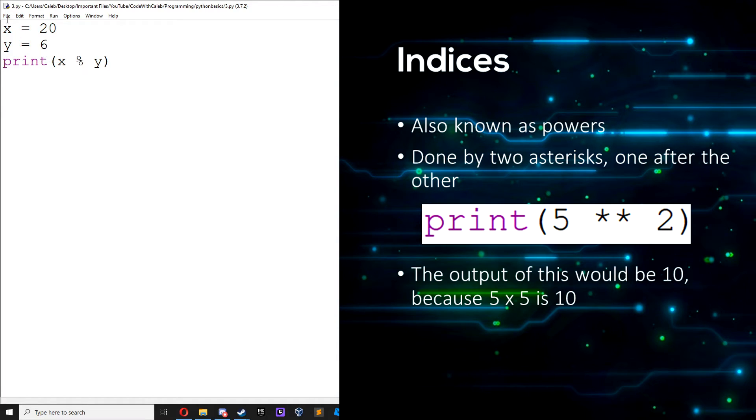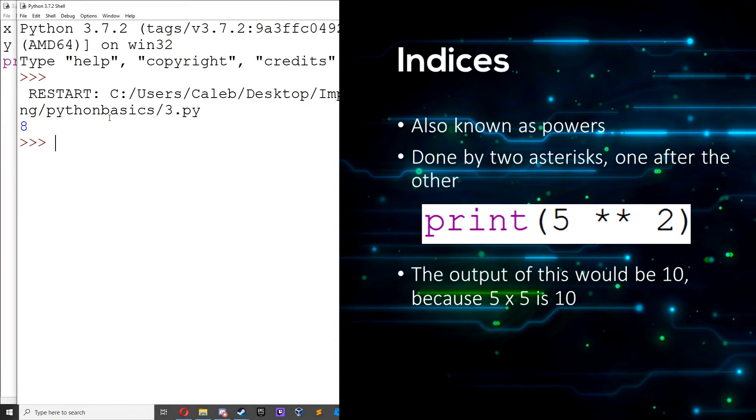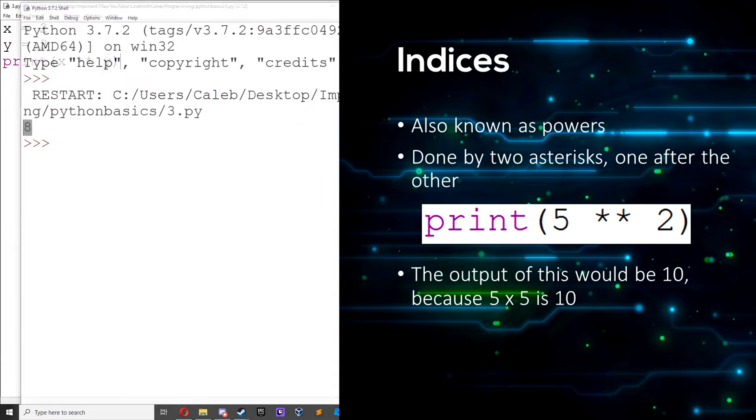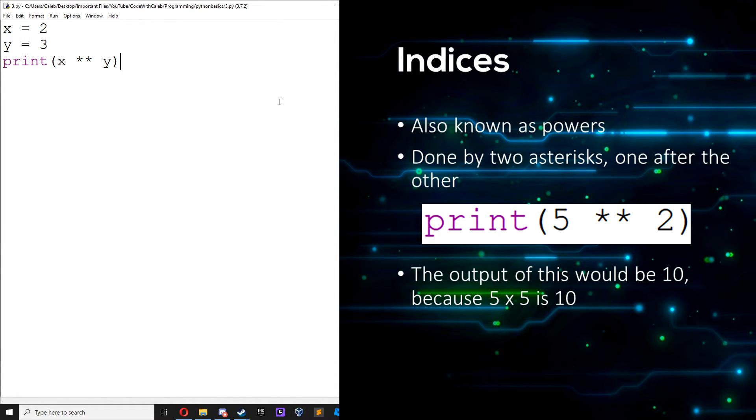We also have indices, also known as powers. This is done by two asterisks in succession. Let's just change this to 2 and 3. This is how we do powers. So 2 to the power of 3, 2 cubed. Run it, we get 8, because 2 times 2 times 2 is 8.